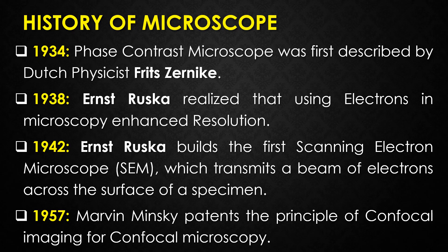Just six years after the invention of the phase contrast microscope, Ernst Ruska developed the electron microscope and realized that using electrons in microscopy can enhance resolution. In 1942, Ernst Ruska built the first scanning electron microscope (SEM), which transmits a beam of electrons across the surface of a specimen. In 1957, Marvin Minsky patented the principle of confocal imaging; using a scanning point of light, confocal microscopy gives slightly higher resolution than conventional light microscopy and makes it easier to view optical slices through a thick specimen.